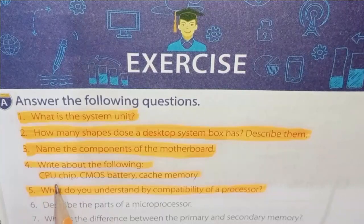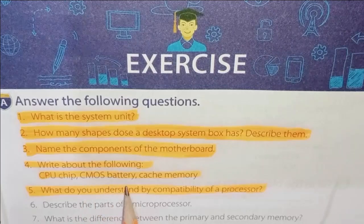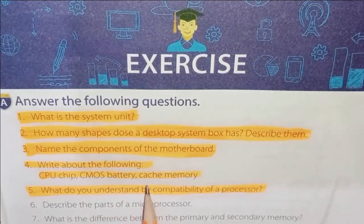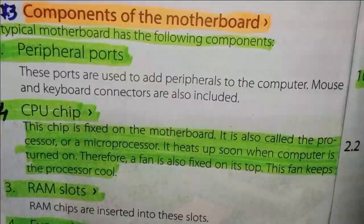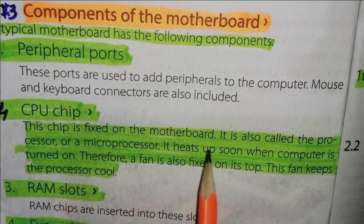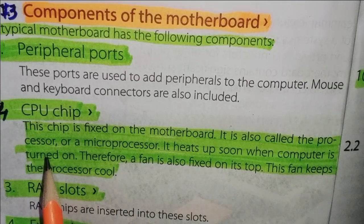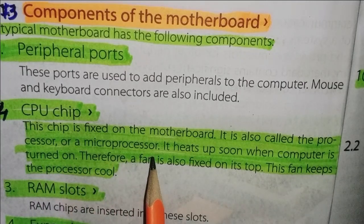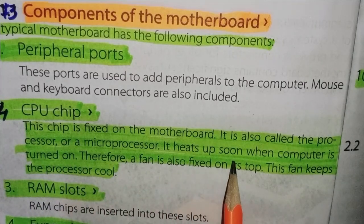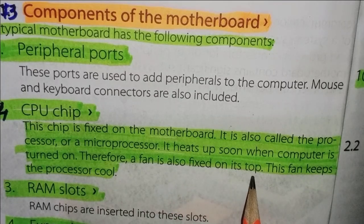Question No. 4: Write about the following things — CPU Chip, CMOS Battery, Cache Memory. No. 1 CPU Chip: This chip is fixed on the motherboard. It is also called the processor or microprocessor. It heats up soon when the computer is turned on, therefore a fan is also fixed on its top. This fan keeps the processor cool.